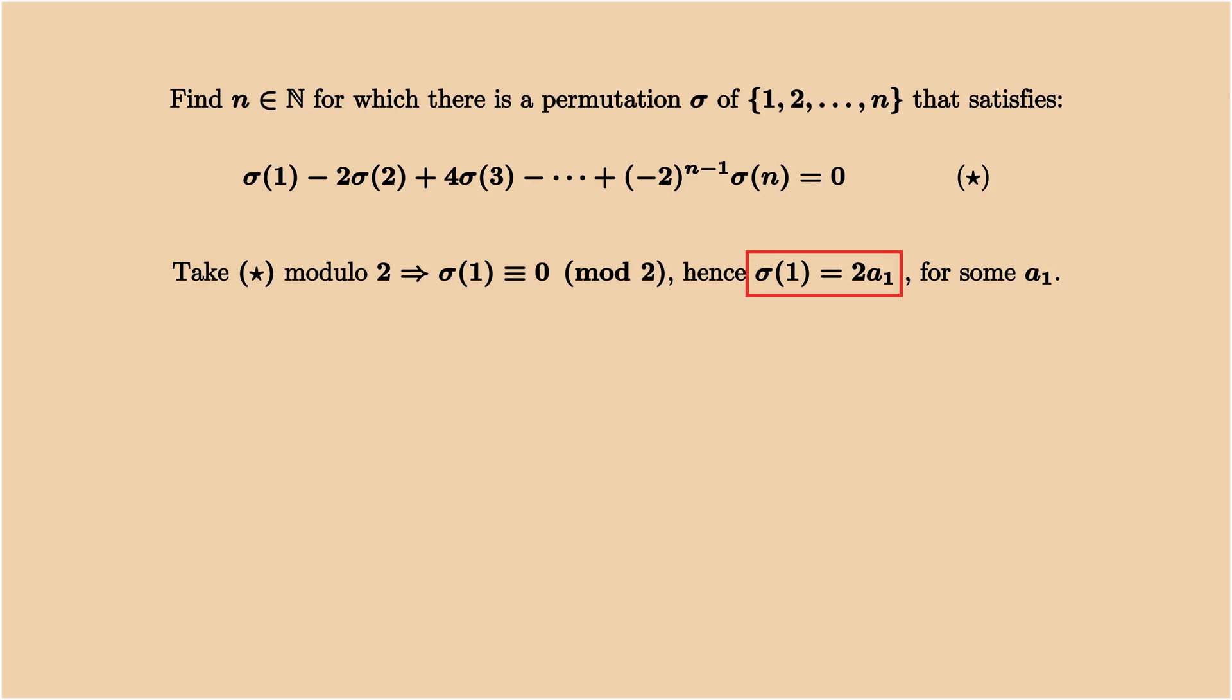Next, we take the equation modulus 4. We get 4 divides sigma 1 minus 2 times sigma 2. Replacing sigma 1 by 2 times a1, we see that sigma 2 needs to have the same parity as a1. This means we can write sigma 2 as a1 plus 2 times a2.